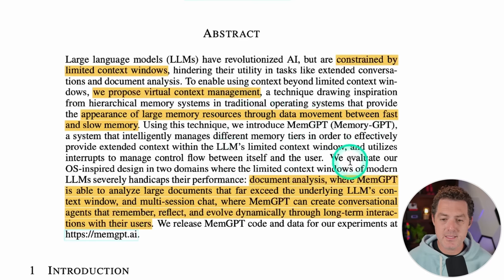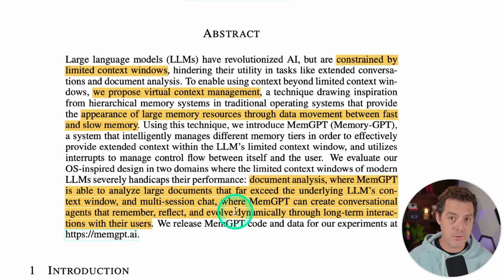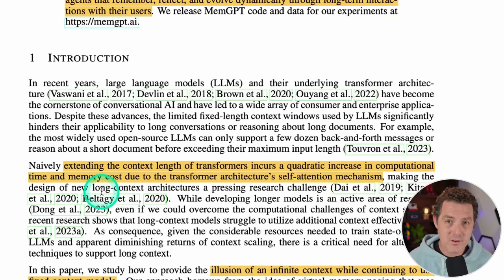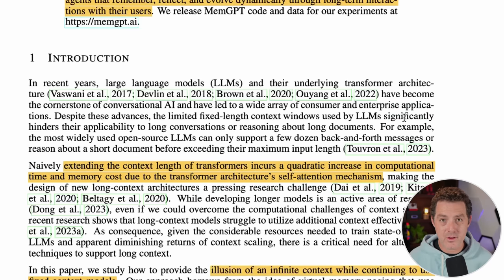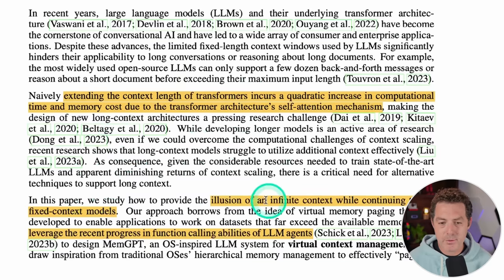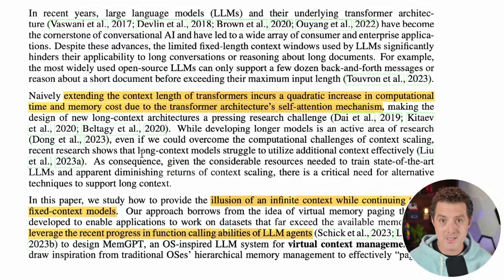They evaluate their methods on two specific use cases: document analysis — chat with your docs — and multi-session chat that can go on for days, weeks, months, years. Here's why simply increasing the context window isn't a great long-term solution: extending the context length of transformers incurs a quadratic increase in computational time and memory cost due to the self-attention mechanism. It becomes extremely expensive the larger the context window. And what we've also found is that even within a large context, the LLM tends to forget parts of it. What they're proposing is the illusion of an infinite context while continuing to use fixed context models.